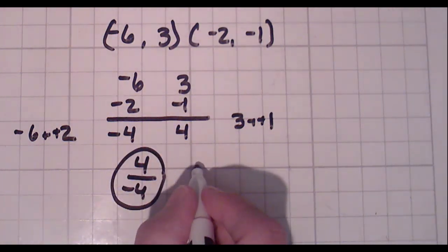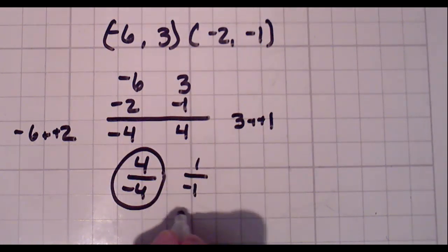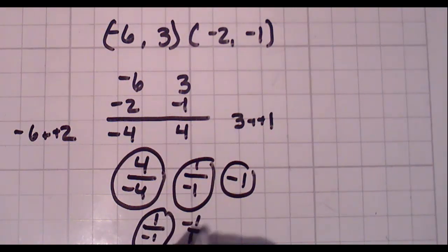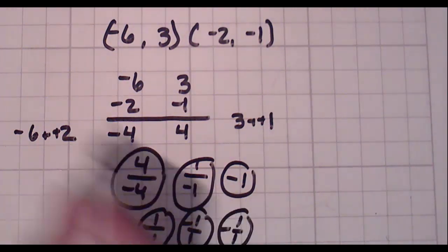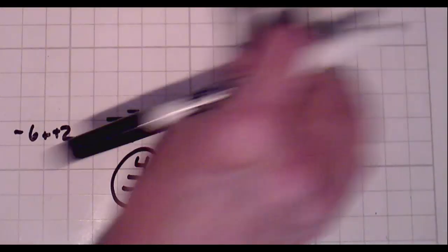4 over negative 4. My slope becomes 1 over negative 1. My slope is negative 1. Now can you say 1 over negative 1? Absolutely. Can you say negative 1 over 1? Sure you can. Or negative 1 over 1. All of those are the same thing. As long as you know your slope is 1 and there's a negative sign in front of it.